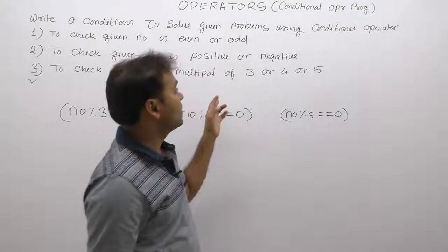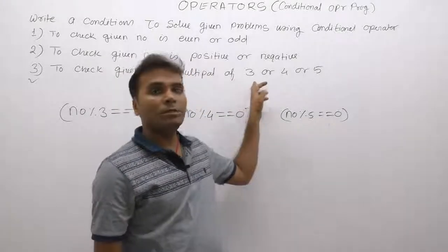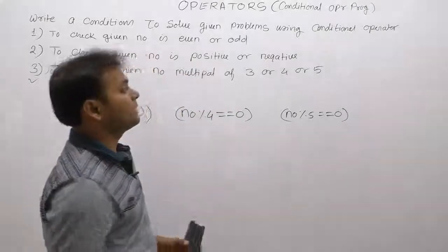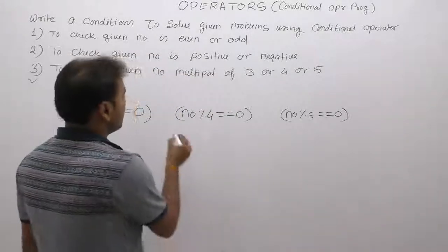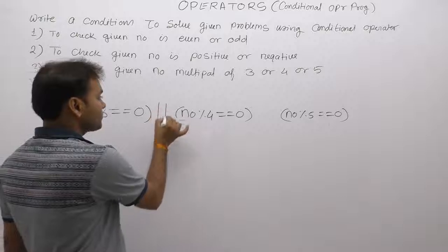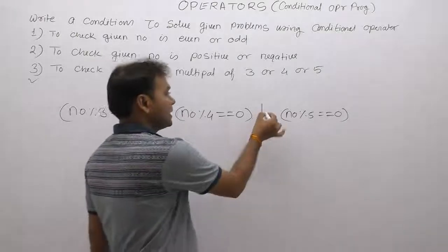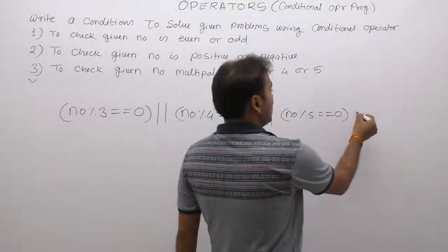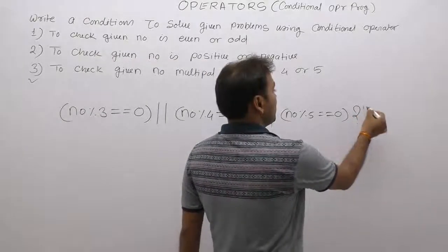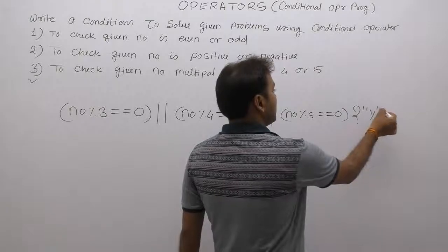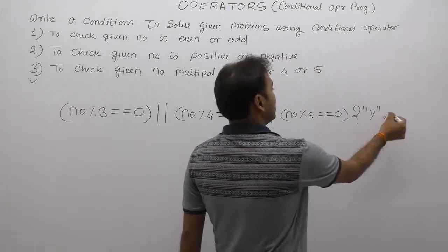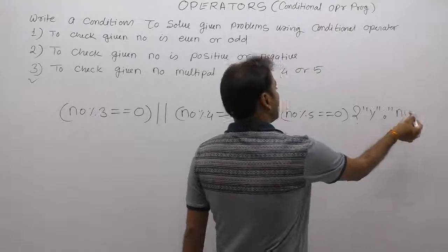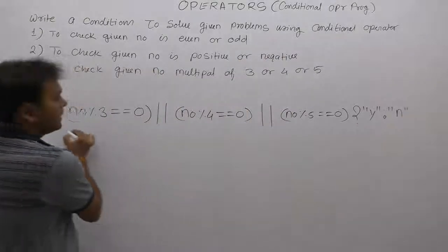Any one condition being true is sufficient — if the number is either a multiple of three, or multiple of four, or multiple of five. If this condition is true then display yes, otherwise display no. Generally the condition is supplied inside the print function.